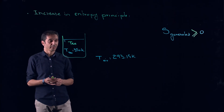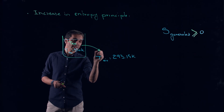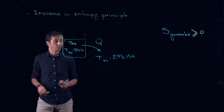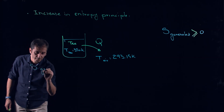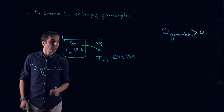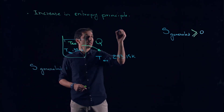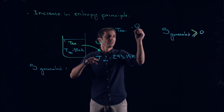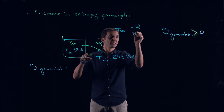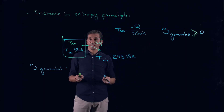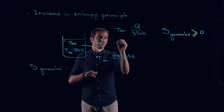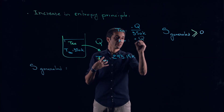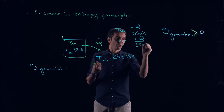This is the process we have to follow. We know that the tea will reject heat Q to the surroundings. Now we have to write S_generated. What's happening with my tea? The tea is losing heat, so it's minus Q — a Q out — over 350 Kelvin. This heat leaving the tea is going to the air, so for the air it's a Q in: plus Q over 293.15 Kelvin.